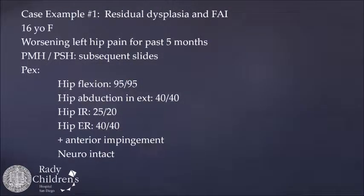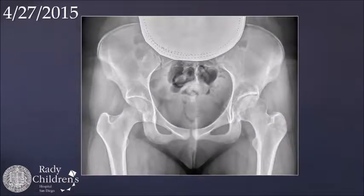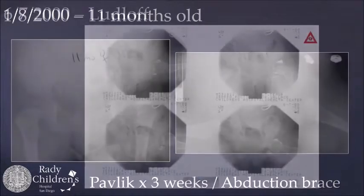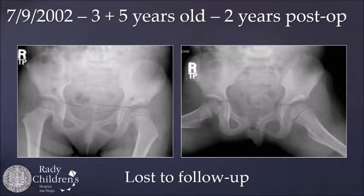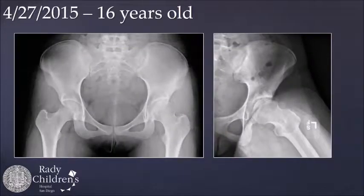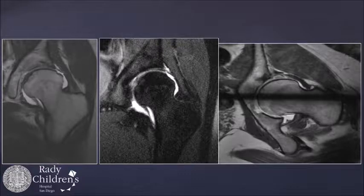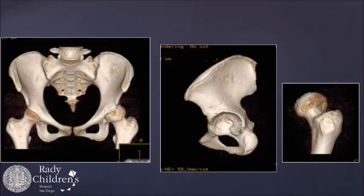Here's a case example: a 16-year-old female with worsening left hip pain. We initially treated her at 11 months of age in 2000 when she presented with a dislocated hip. She was treated with a Pavlik harness and abduction brace, which failed, and then underwent a Ludloff open reduction and was followed radiographically. She was lost to follow-up for a number of years and then re-presented at 16 with pain. Based on the radiographs, you can see the dysplasia and slightly large head coxa magna, possibly due to mild AVN after the open reduction.